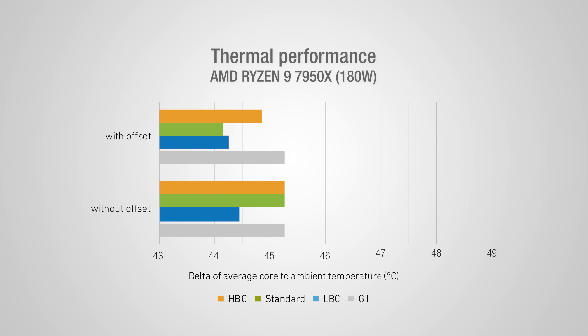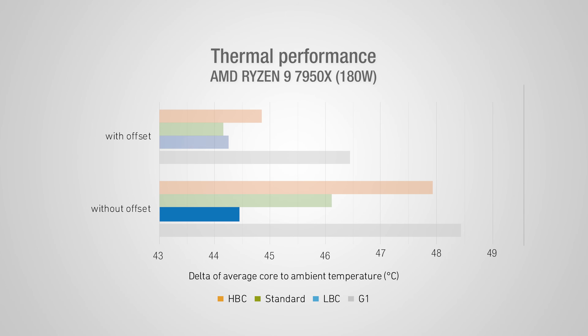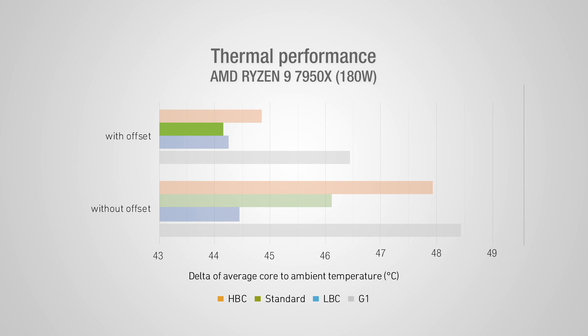So what about AMD AM5? With this processor, the specialized LBC version typically provides 1 to 2 degrees C better performance compared to the standard version when used without the offset mounting. However, when using the offset mounting option included with the cooler, which shifts the cooler right above the processor hotspot, the standard version tends to perform mostly on par, or even slightly better than the specialized LBC variant. This means that unless you are unable to use the offset mounting option for compatibility reasons, the absolute best results will come from using the medium base convexity standard version with the mounting offset.